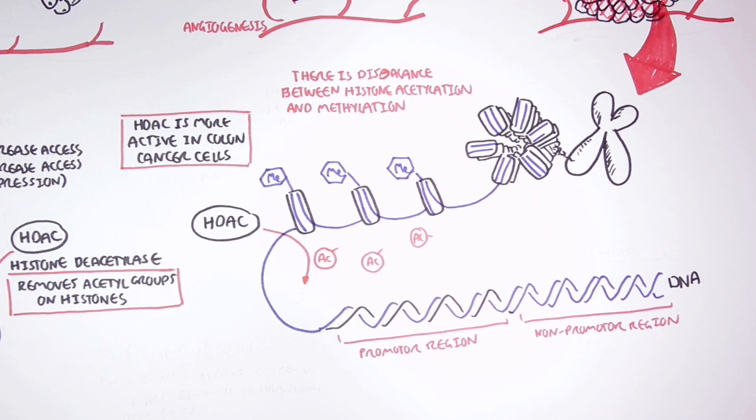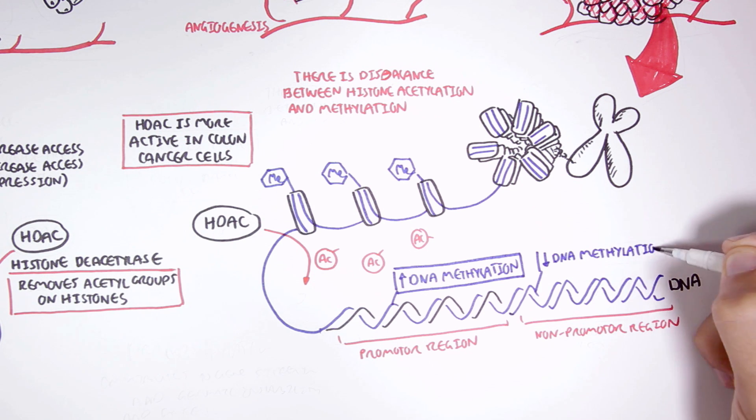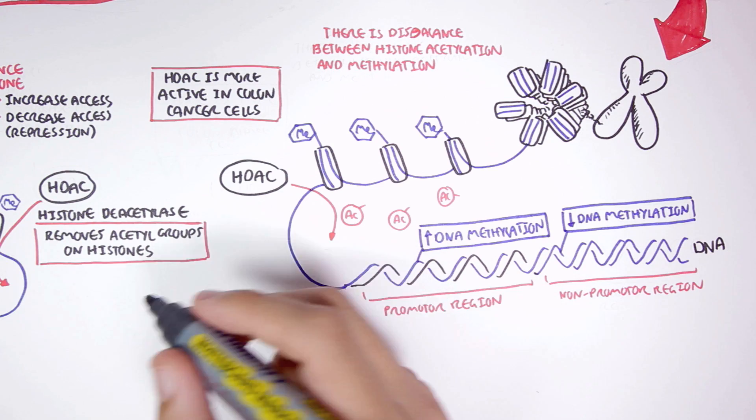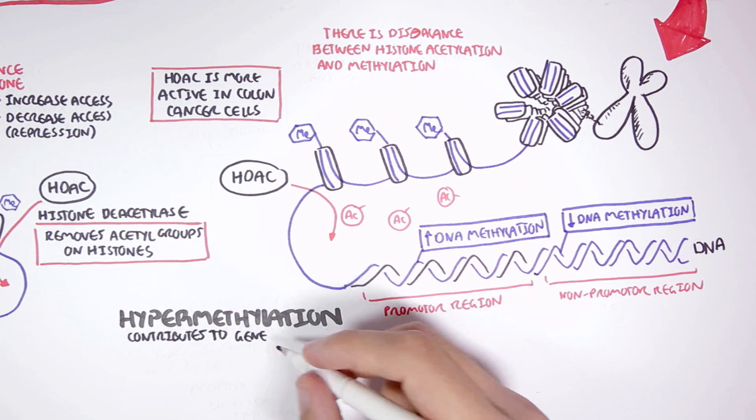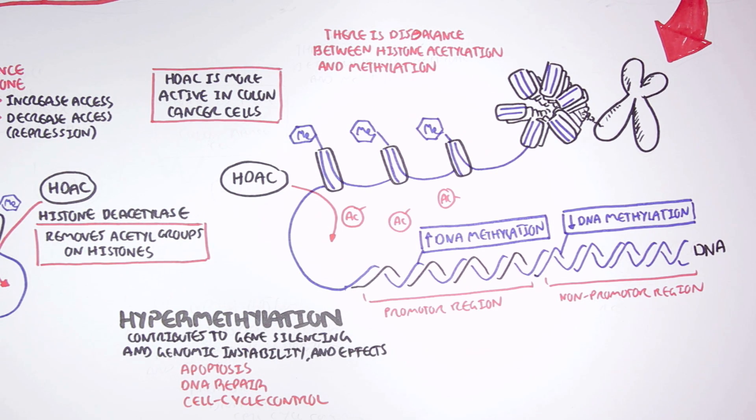In colon cancer cells, we also see changes in DNA methylation. In promoter regions, for example, there is usually hypermethylation, particularly in tumor suppressor genes and DNA repair genes. This results in some of the mutations we talked about earlier. In non-promoter regions, there tends to be fewer methylation. So again, there is hypermethylation on promoter regions which contributes to gene silencing and genomic instability, and it will affect apoptosis, DNA repair, and cell cycle control. And there tends to be a decrease in methylation on non-promoter regions, which essentially don't do anything.